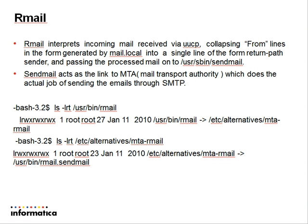So, let's see what R-Mail is. R-Mail is a program that parses mail received via UUCP and parses the from and to fields that it received from PowerCenter, and sends the processed mail to the SendMail program. The SendMail program, which is installed in /usr/sbin, is the actual MTA. Below is an example of where these programs are found in your Unix and Linux servers and how they are linked. Please make sure that you have SendMail and R-Mail programs installed and that their path environment variables are also included so that these emails work.